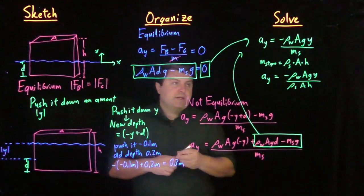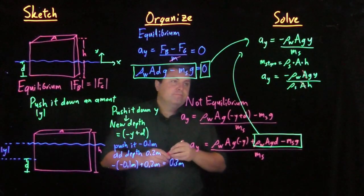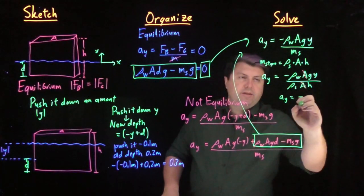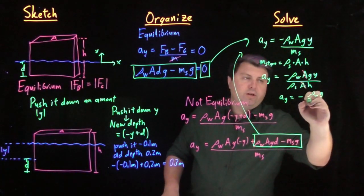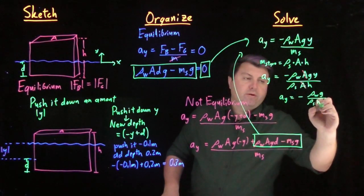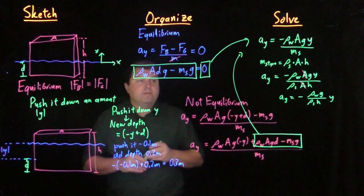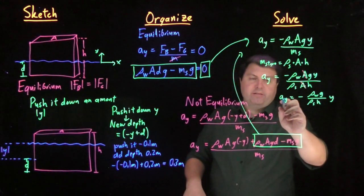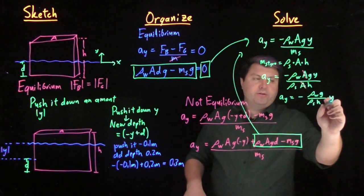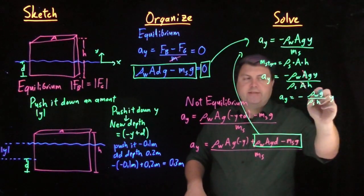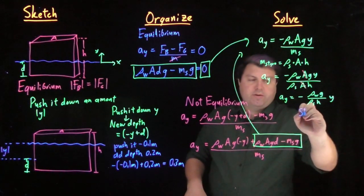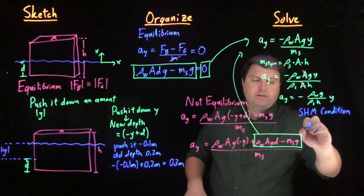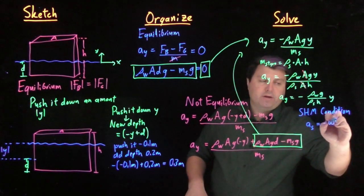And from this I can cancel this out, and I have my acceleration in the y is a negative, and then I have ρ_w g over ρ_s h times y. Why did I do all of this? Well, I have my acceleration, the second derivative of y, being related to y with a minus sign and some constant factor. Let's remember the simple harmonic motion condition is a = -ω² s.